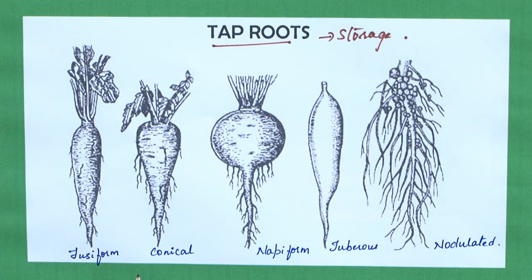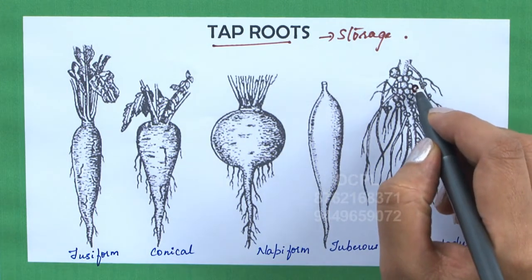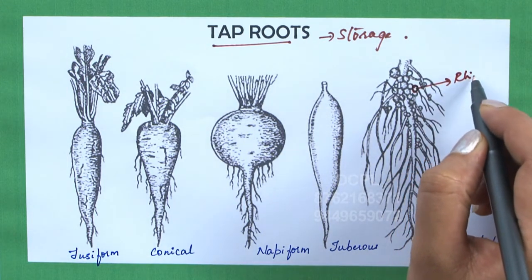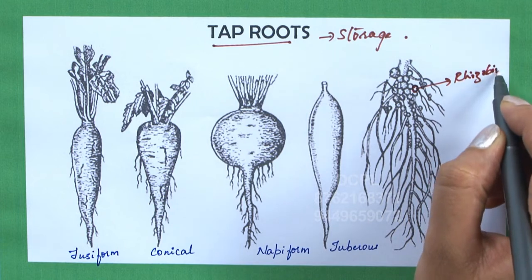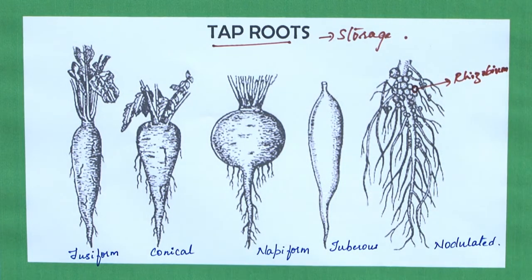So the first function is storage, where the tap root is modified into fusiform, conical, napiform, and tuberous roots. Then the secondary and tertiary roots are modified to form nodulated structures wherein the bacterium Rhizobium resides and helps in the fixation of nitrogen from the soil.